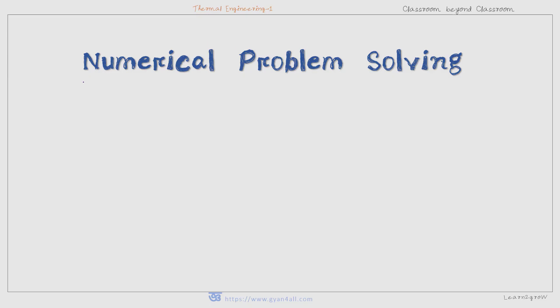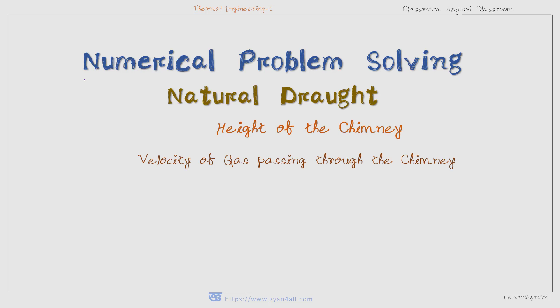Welcome. Today we will solve some numerical problems on natural draft. We will solve problems on height of the chimney — that means we will calculate the height of the chimney. Also related to height of the chimney, we can solve problems on differential pressure that exists in a chimney and also velocity of gas passing through the chimney, as well as the mass flow rate through the chimney.